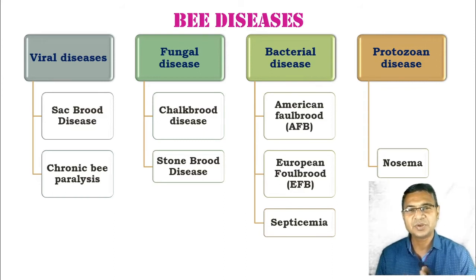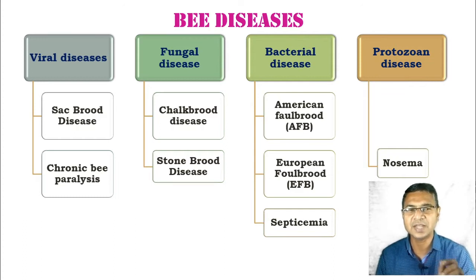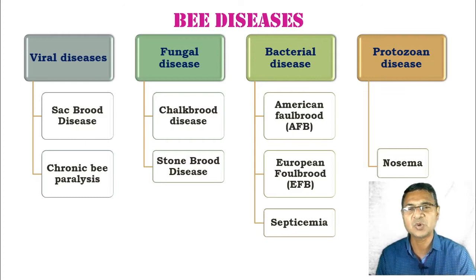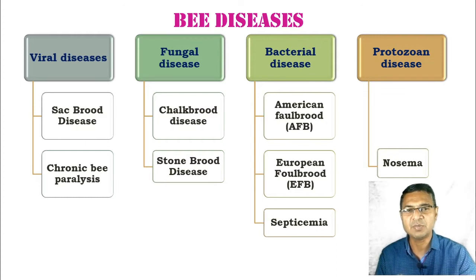Good morning friends. Today we are going to discuss about the next part of the bee diseases in the form of bacterial diseases and protozoal diseases. In the previous lecture we already discussed about viral diseases and fungal diseases. Here we will cover American Foulbrood, European Foulbrood, and septicemia as bacterial diseases, while for protozoal disease, the Nosema disease. Step by step we will focus on those diseases.